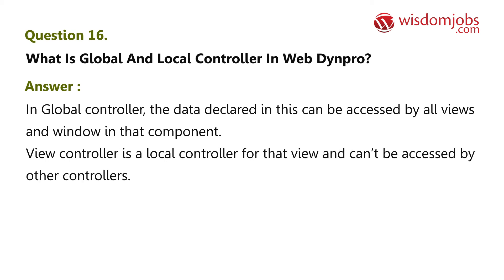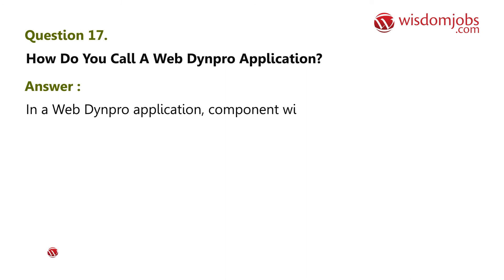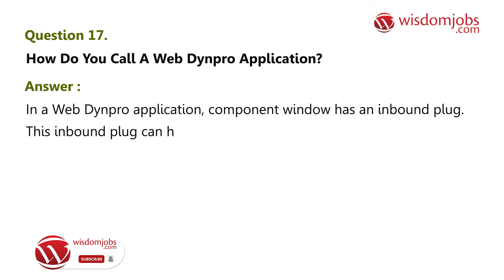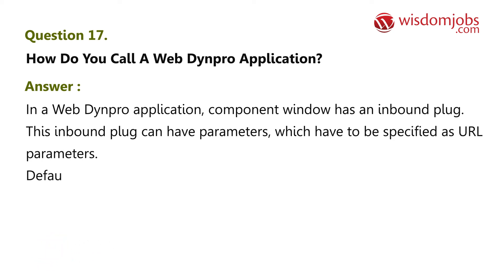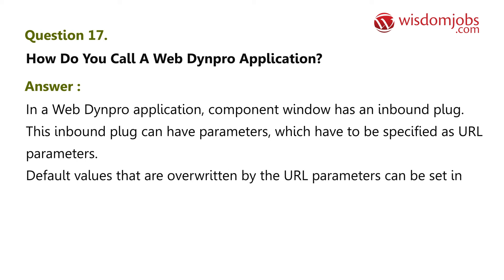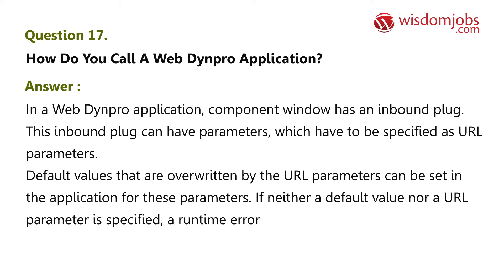Question 17: How do you call a WebDynpro application? Answer: In a WebDynpro application, the component window has an inbound plug. This inbound plug can have parameters which have to be specified as URL parameters. Default values that are overwritten by the URL parameters can be set in the application for these parameters. If neither a default value nor a URL parameter is specified, a runtime error is triggered.